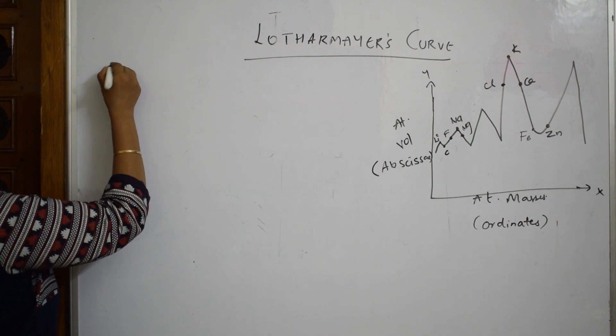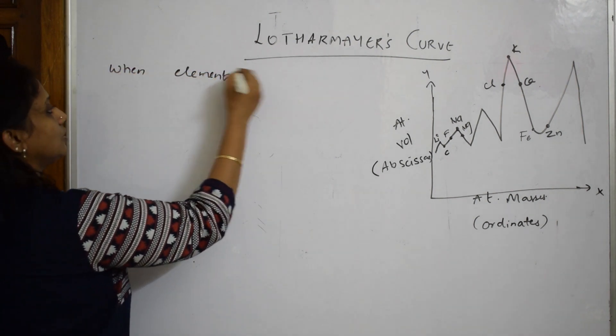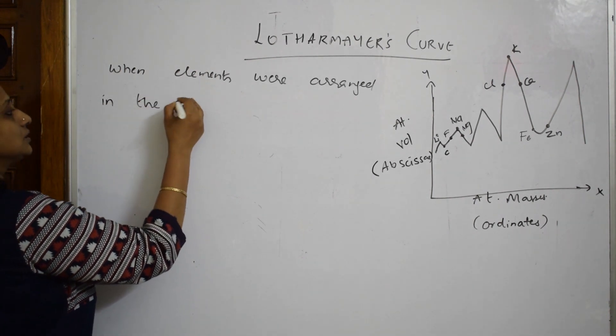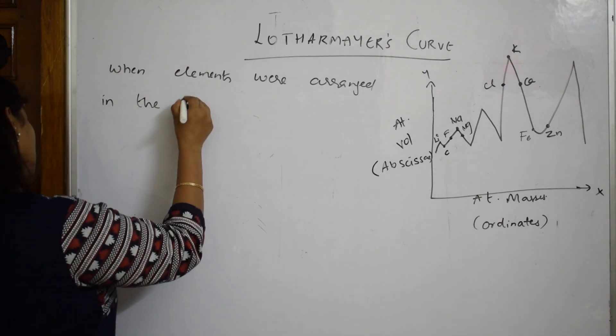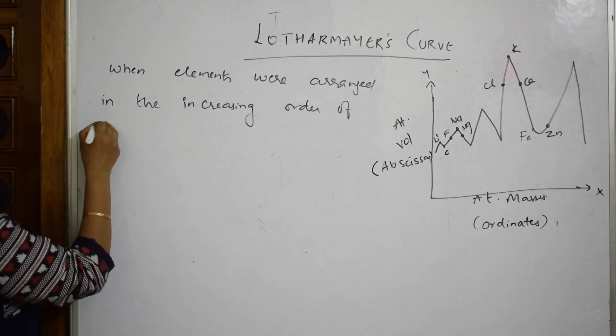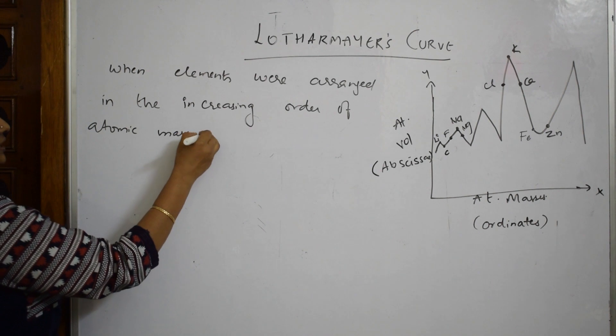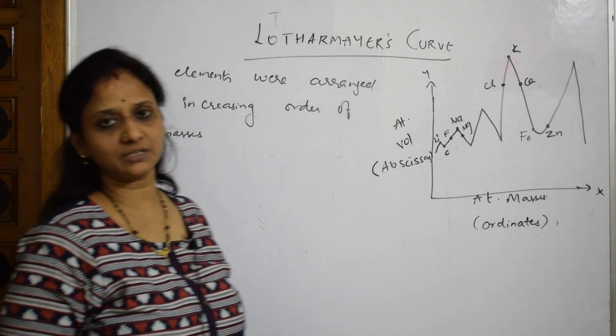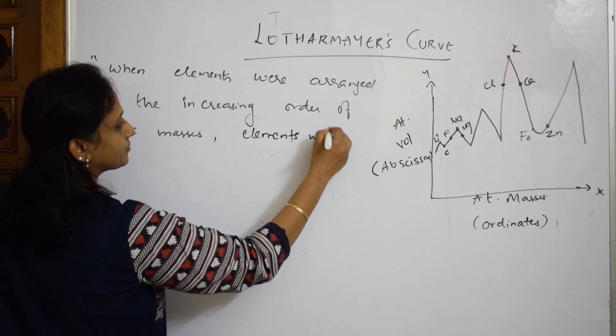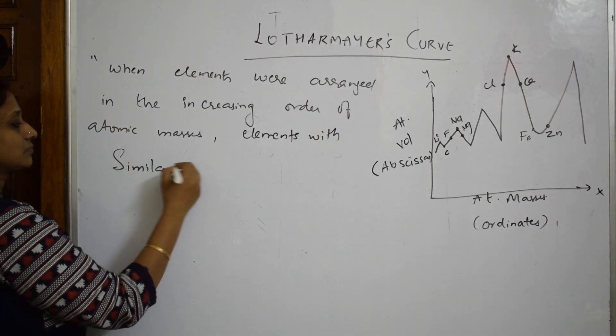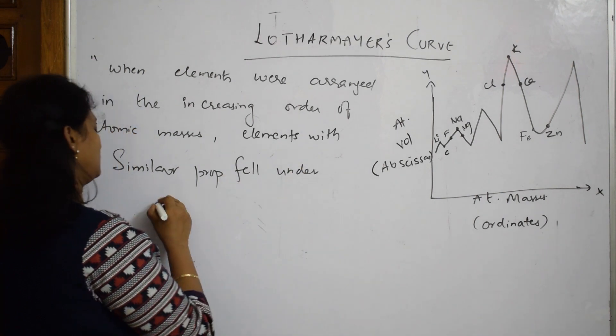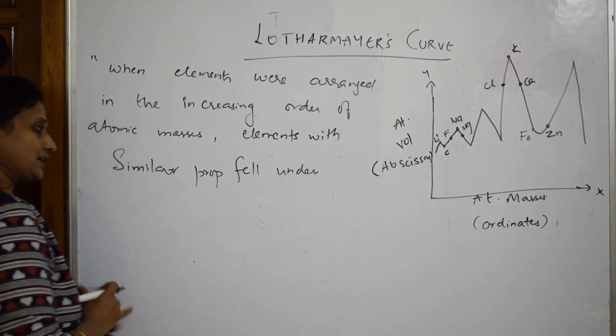When elements were arranged in the increasing order of atomic masses, elements with similar properties fell under one slot. Means they occupied one slot.